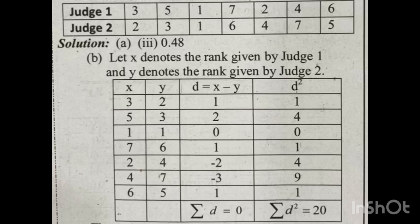Next, we square each d value to get d-squared. One squared = 1; 2 squared = 4; 0 squared = 0; 1 squared = 1; minus 2 squared = 4; minus 3 squared = 9; 1 squared = 1. Sigma d-squared equals 1 plus 4 plus 0 plus 1 plus 4 plus 9 plus 1, which equals 20.